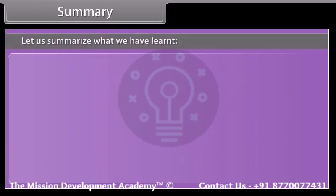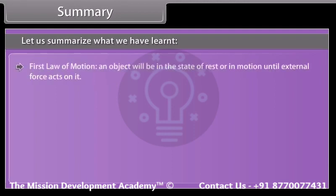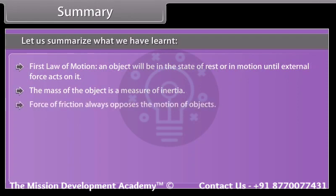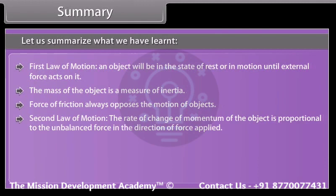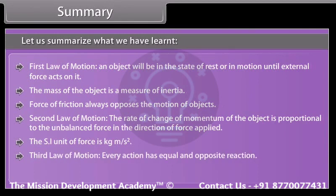Summary. First law of motion: an object will remain in the state of rest or in motion until an external force acts on it; the mass of the object is a measure of inertia; force of friction always opposes the motion of objects. Second law of motion: the rate of change of momentum of the object is proportional to the unbalanced force in the direction of force applied; the SI unit of force is kilogram meter per second squared. Third law of motion: every action has an equal and opposite reaction; the total momentum is always conserved.